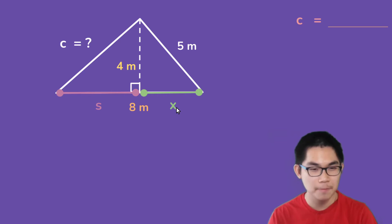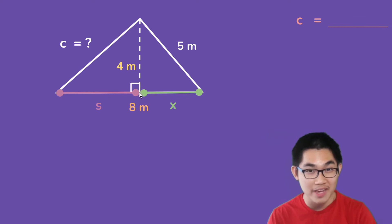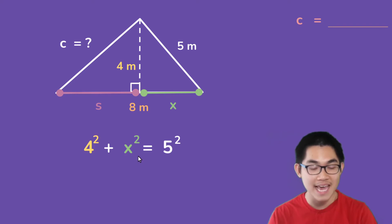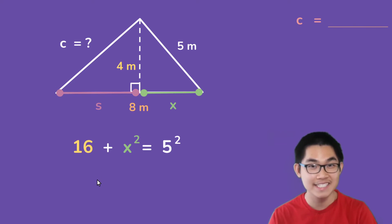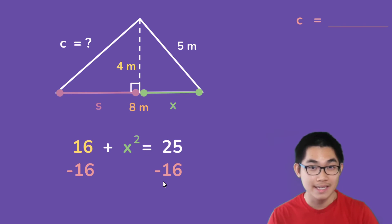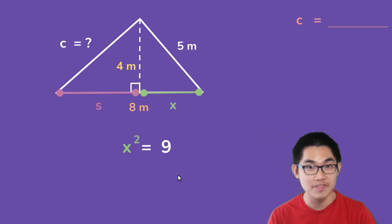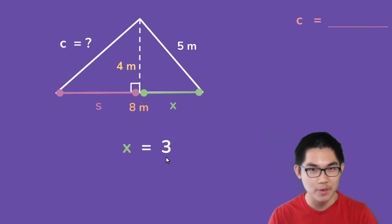So which one can we find first? Well, I'm going to solve for x because we know that this side is 4 and we know that this side is 5. So using the Pythagorean theorem, because we know that this forms a right triangle, we can say that 4 squared plus x squared is equal to 5 squared. So 4 to the power of 2 gives you 16, and 5 to the power of 2 gives you 25. So we can subtract both sides of the equation by 16. So on the left side, 16 minus itself gives you 0, and on the right side, 25 minus 16 gives you 9. If we take the square root of both sides of the equation, x is equal to 3. And so we know that x is 3 meters.